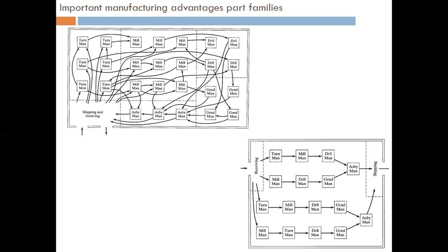Now, why does this part family give advantages? If you look at the first top figure, which shows a factory layout, you can see where raw materials are received and different operations are performed — turning machines, milling machines, drilling machines — in a random combination where the part is moving from one machine to the other.